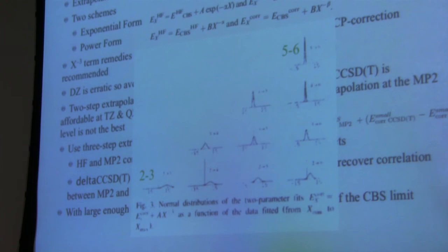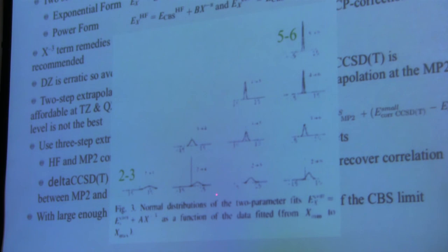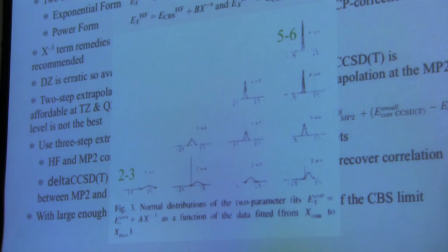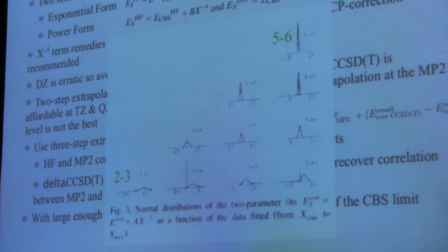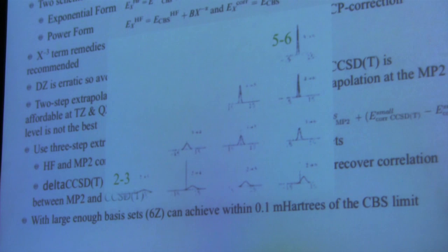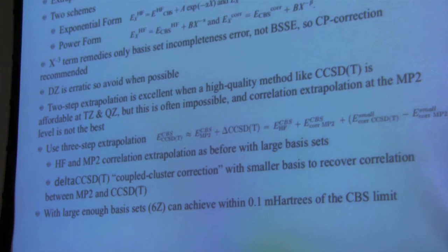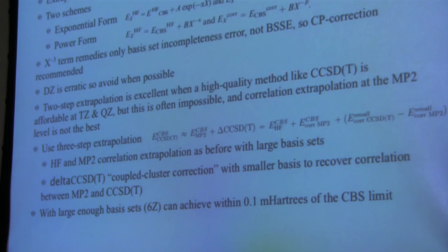These are the same error distribution curves using extrapolations. Double+triple-zeta extrapolation, three-point (DT+Q), four-point, and five-point extrapolations are shown. For two-point extrapolations: DT, then TQ, then Q5 — better still — and 5Z+6Z is the best. This illustrates what is meant about avoiding double-zeta. This two-step extrapolation is excellent when you can do CCSD(T) at triple- and quadruple-zeta, though this is often impossible for large systems.